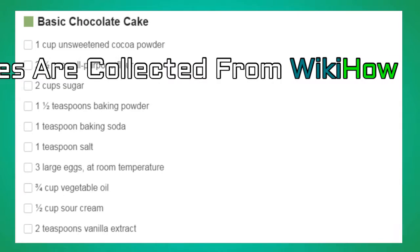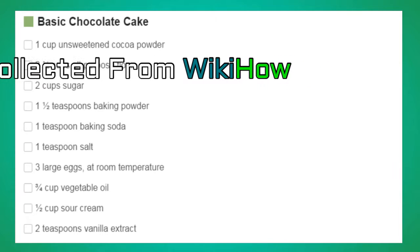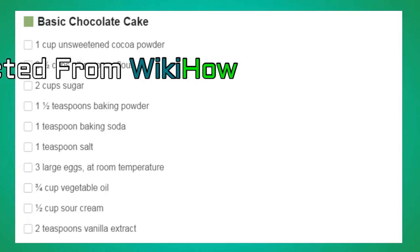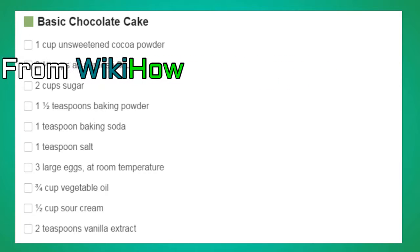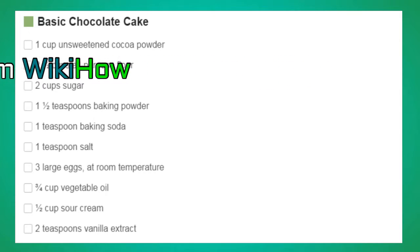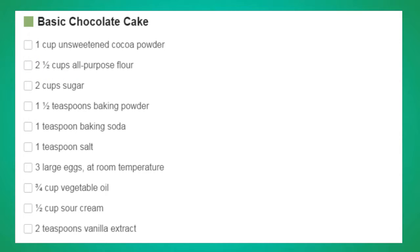Ingredients you'll need: 1 cup unsweetened cocoa powder, 2 and a half cups all-purpose flour, 2 cups sugar, 1 and a half teaspoons baking powder, 1 teaspoon baking soda, 1 teaspoon salt, 3 large eggs at room temperature, 3/4 cup vegetable oil, 1/2 cup sour cream, and 2 teaspoons vanilla extract.